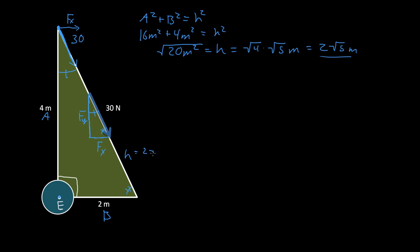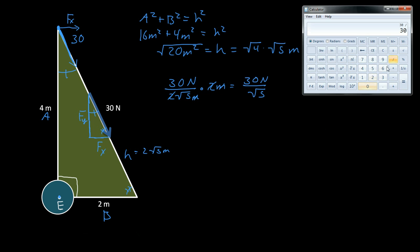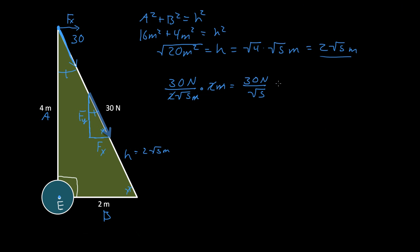Now we know h = 2√5 meters. To find Fx, we divide 30 Newtons by 2√5 meters and multiply by the relevant side length, which is 2 meters. The meters cancel, and the 2s cancel, giving us 30 Newtons over √5. Calculating that: 30 divided by √5 equals 13.4 Newtons. So the force in the x direction is 13.4 Newtons.